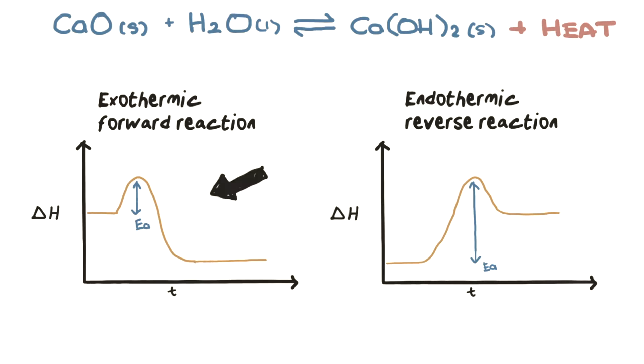This graph demonstrates the forward exothermic reaction, whereas this graph shows a reverse endothermic reaction.